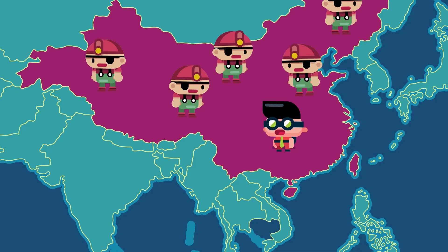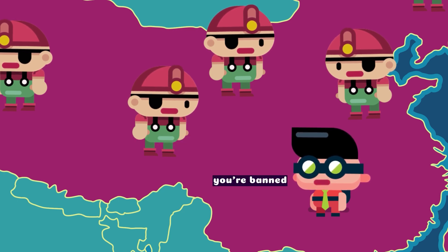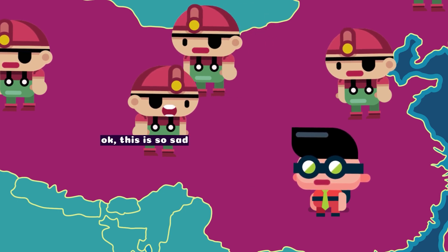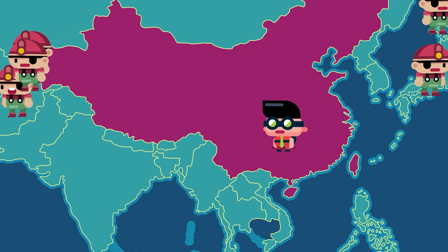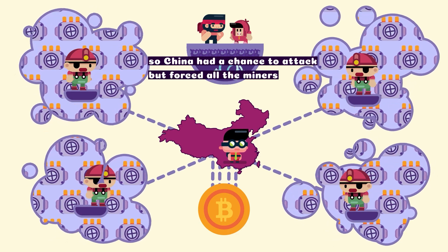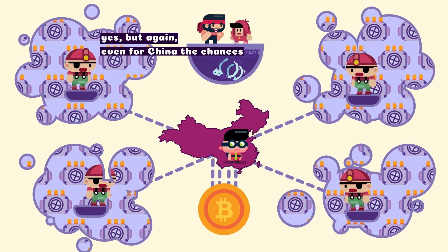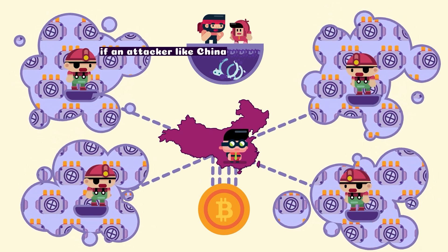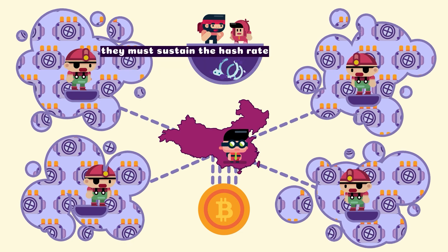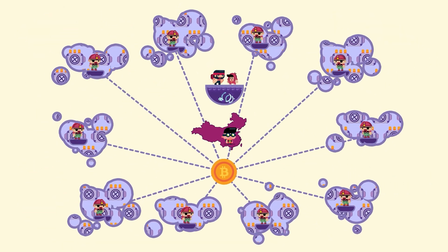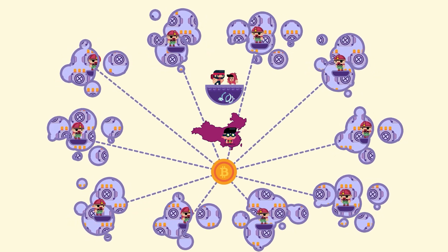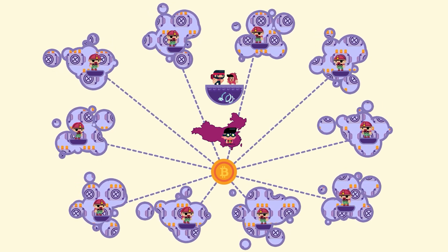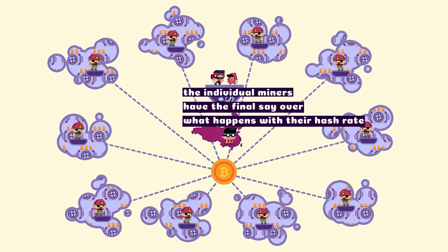So what's China going to do? Hey Bitcoin miner — you're banned. What? We just banned you. Leave the country. Okay, this is so sad. I'll just take my hash rate and mine Bitcoin elsewhere. So China had a chance to attack but forced all the miners out of the country instead. Even for China, the chances of a fake hash rate attack succeeding would be slim. If an attacker like China controlled 51% of the mining pools, they must sustain the hash rate. Individual miners can switch pools in a matter of seconds, taking their hash rate with them. This would leave China with little time before the honest miners notice the attack and switch pools. The individual miners have the final say over what happens with their hash rate.